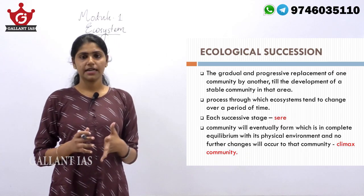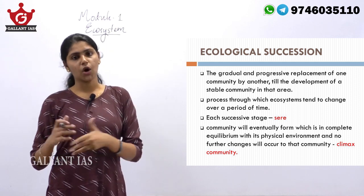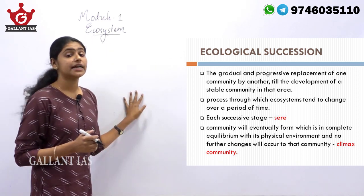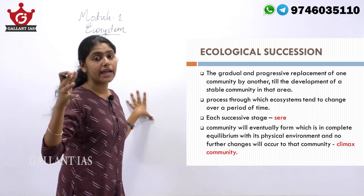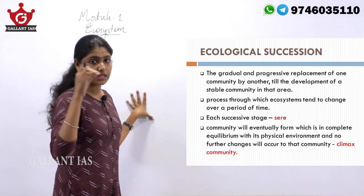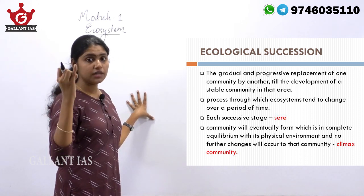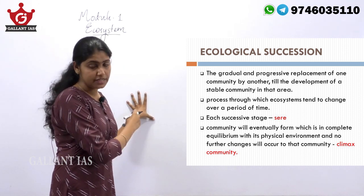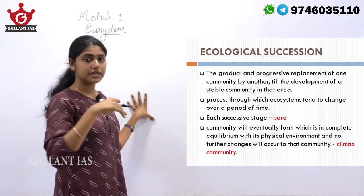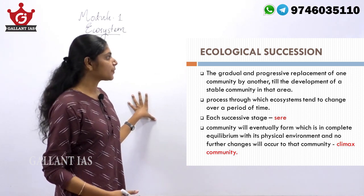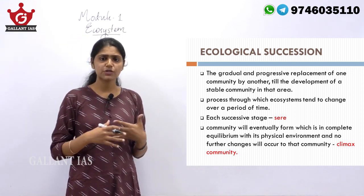The next topic regarding ecosystem is ecological succession, which is another function of ecosystem. We have seen that the three broad heads under functions of ecosystem are ecological succession, energy flow, and biogeochemical cycles. Regarding ecological succession, it is a gradual and progressive replacement of one community by another community until a stable community is established in equilibrium with the ecosystem.